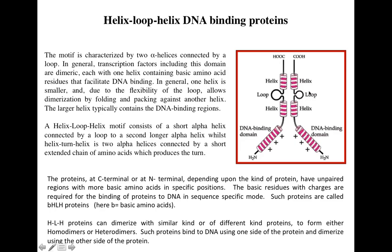Helix-loop-helix DNA binding proteins consist of two alpha helices connected by a short loop of amino acids, and this loop is a non-helical structure — it is not made up of an alpha helix. In this particular example, the C-terminal helix is a shorter one, and the other is a longer alpha helix. So one longer alpha helix is connected via this loop to a shorter alpha helix.